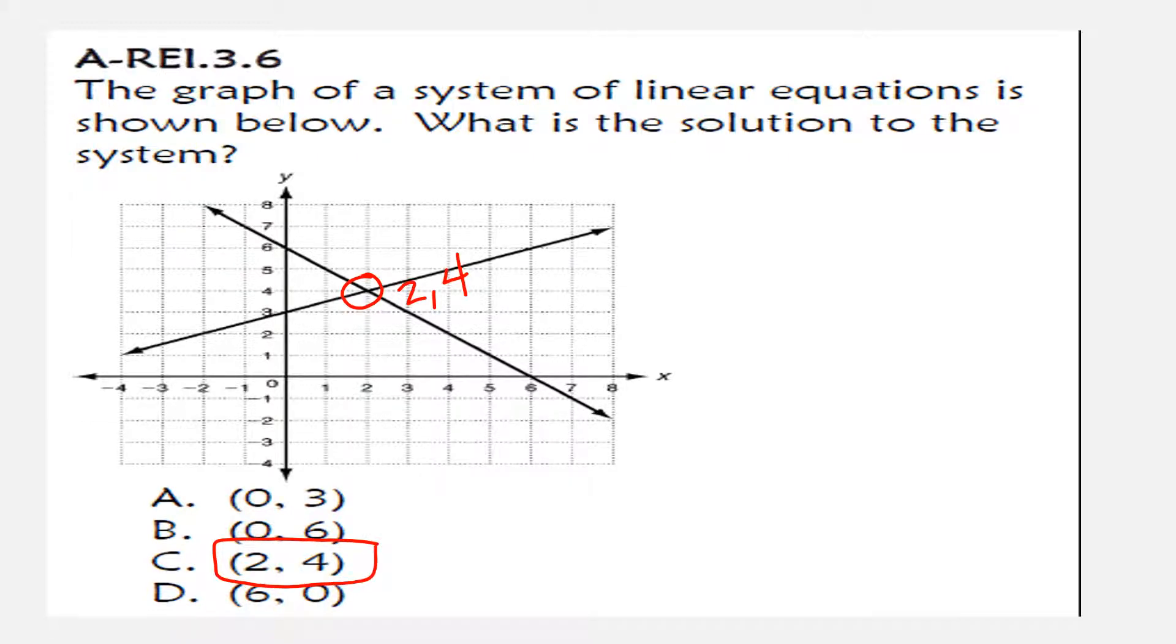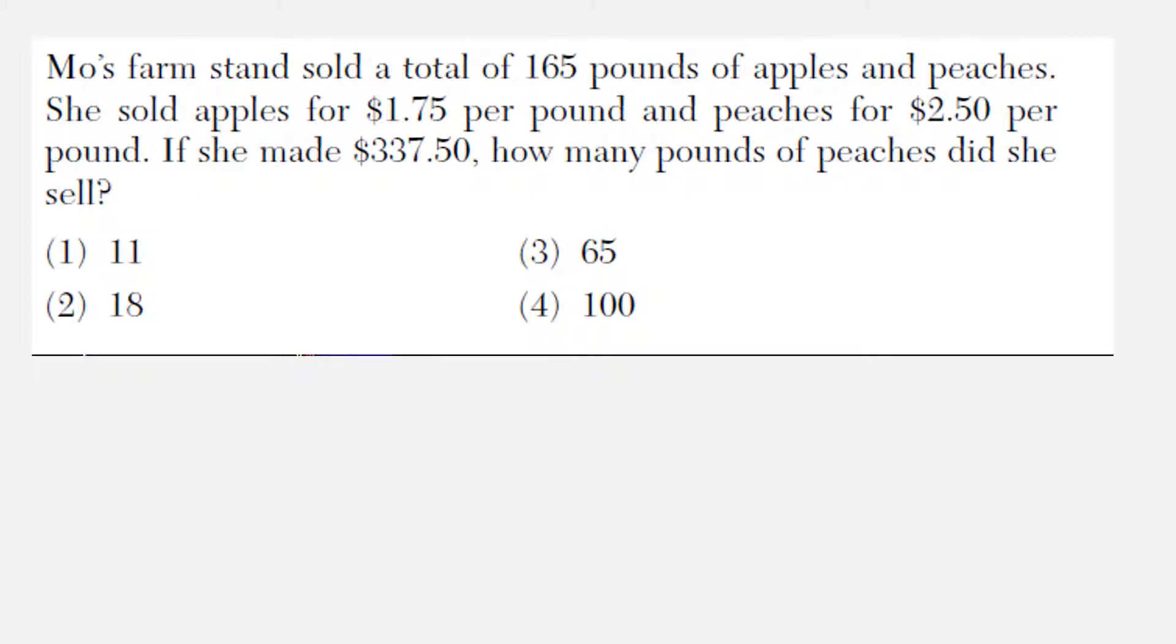This one says: Moe's farm stand sold a total of 165 pounds of apples and peaches. She sold apples for $1.75 per pound and peaches for $2.50 per pound. If she made $337.50, how many pounds of peaches did she sell? Let's make apples X and peaches Y. We have 165 pounds total, so one equation is X plus Y equals 165.